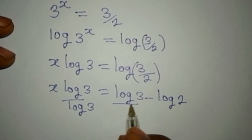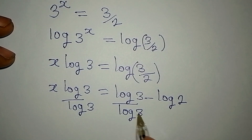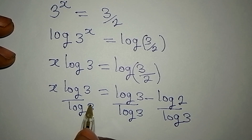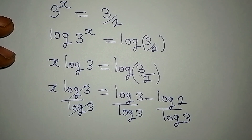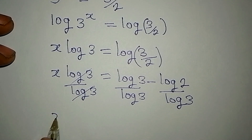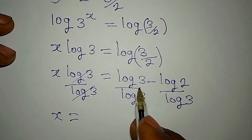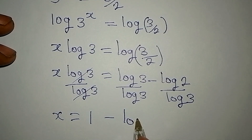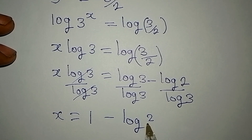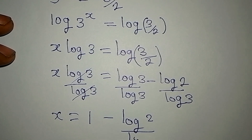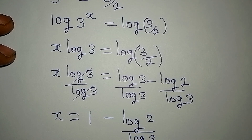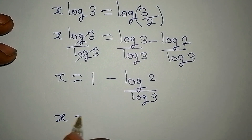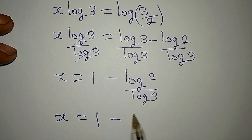Now divide both sides by log 3, since we are looking for the value of x. Divide this by log 3 — this and this will cancel — so x is equal to log 3 divided by log 3, which is 1, minus log 2 over log 3. So x equals 1 minus log 2 to base 3.